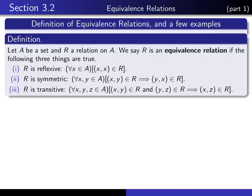Finally, we say that R is transitive if for any three elements X, Y, and Z in A, if X is R-related to Y and Y is R-related to Z, then X is necessarily R-related to Z.